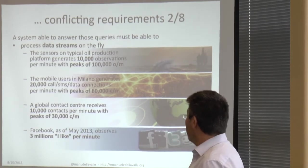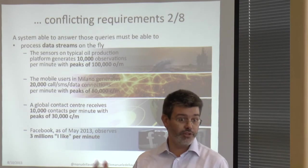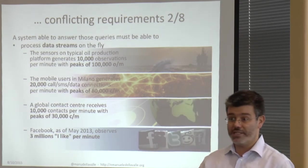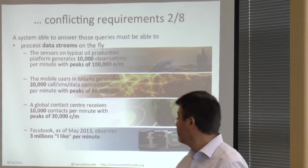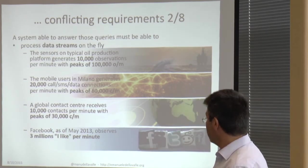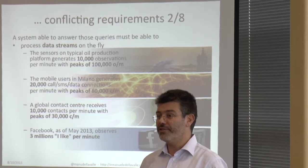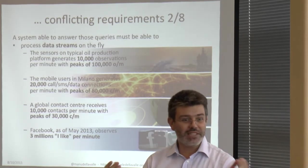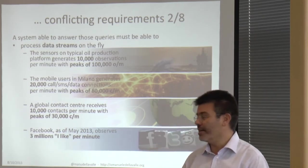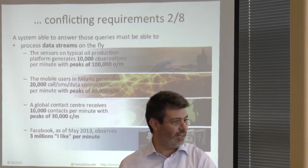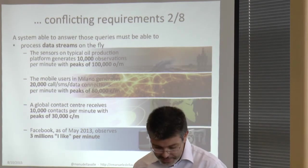In the Milano setting, those are the numbers of calls, SMS, and internet accesses every minute from the city. Three million people press 'Like' every minute, so if you simply want to make sense of and aggregate them — what do they like, sport, food? — it's not such an easy task in any case.